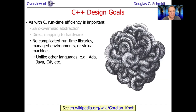C++ doesn't require complicated runtime libraries, managed environments, or virtual machines, unlike other languages like Ada or Java, which have much more complicated runtime environments. Those environments are getting faster — people are doing better just-in-time compilers, hardware is getting faster — but they're still not likely to be as fast as C++ because it's so close to the metal.